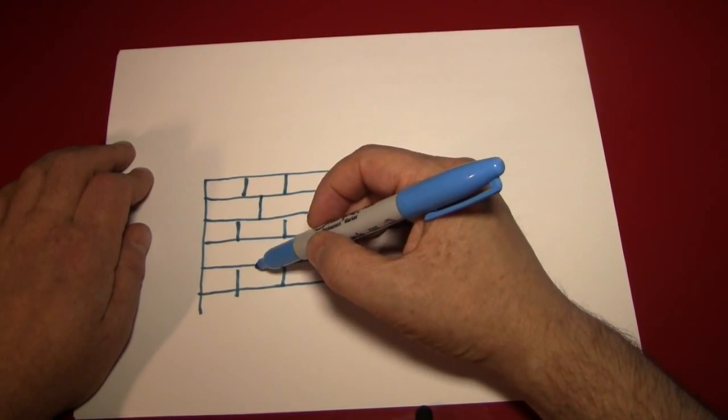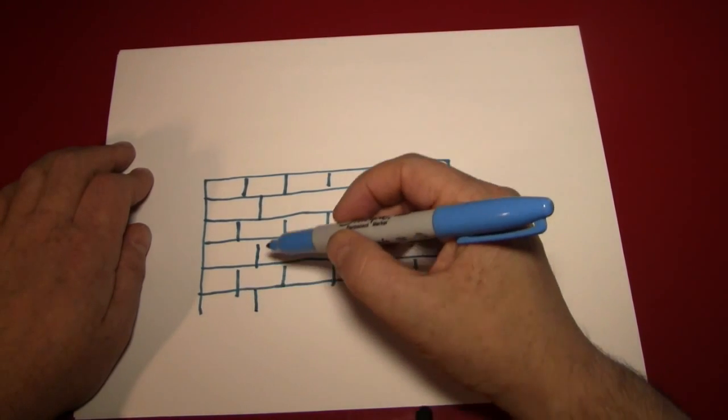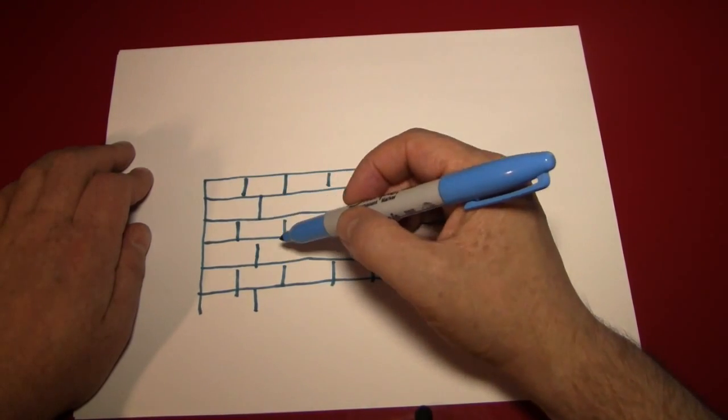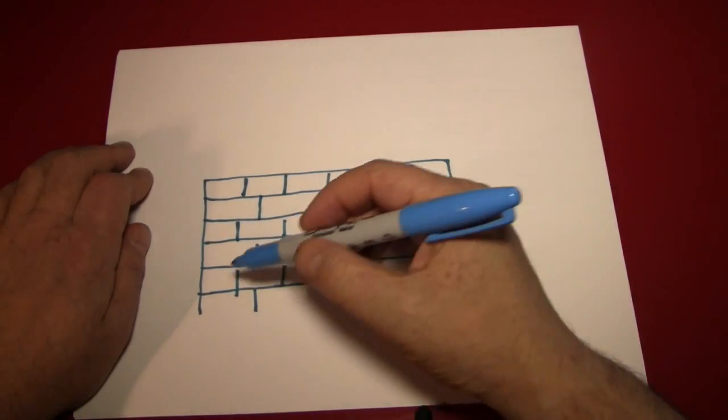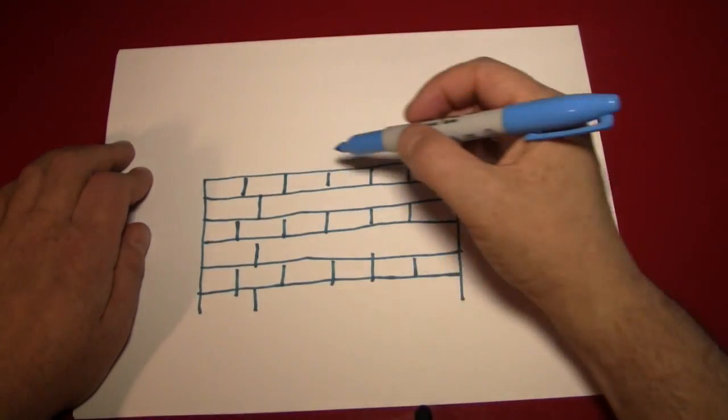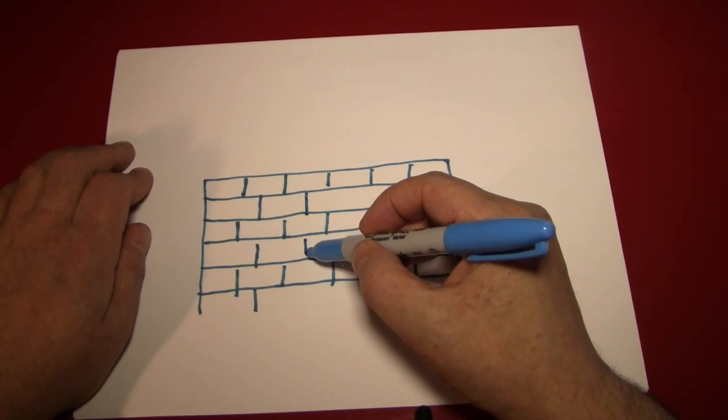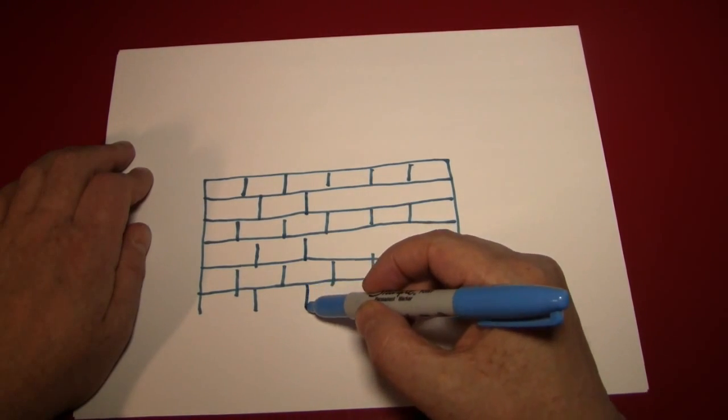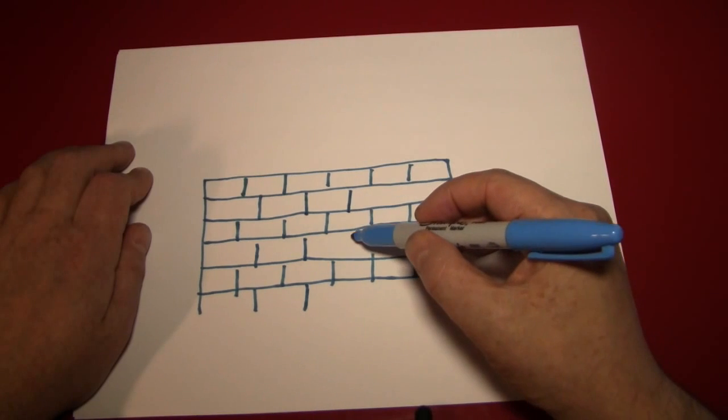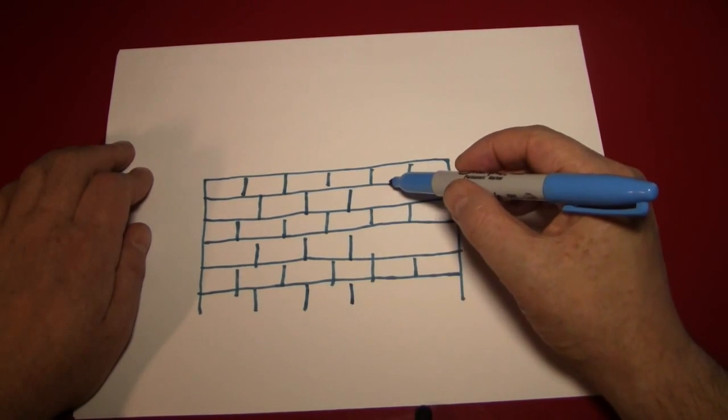The next thing we want to do is make the alternating rows by creating lines in between the lines we drew on the rows that we haven't drawn in yet. Now whenever possible, a good thing to do is to draw from up to down, because that's the way you have the most control over your pen.